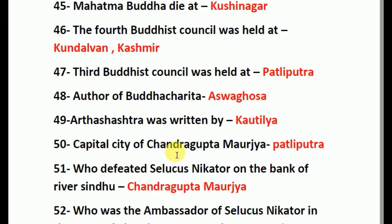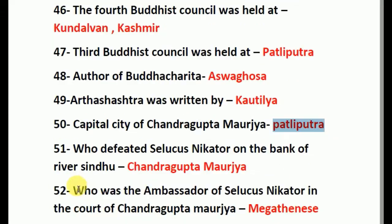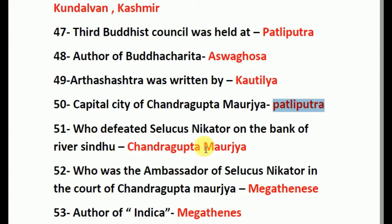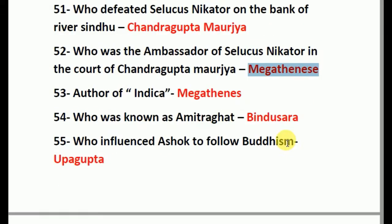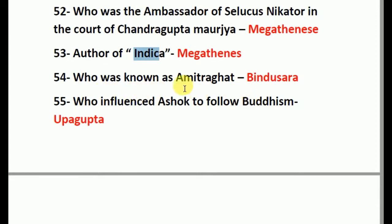Capital city of Chandragupta Maurya is Pataliputra. Who defeated Seleucus Nikator on the banks of the river Sindhu? The answer is Chandragupta Maurya. Who was the ambassador of Seleucus Nikator in the court of Chandragupta Maurya? The answer is Megasthenes. Author of Indica: Megasthenes. Who was known as Amitraghata? The answer is Bindusara.